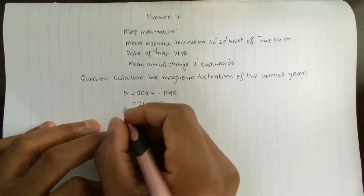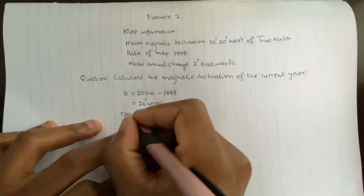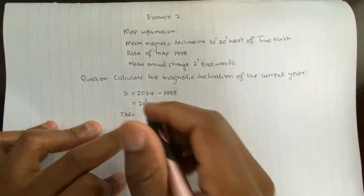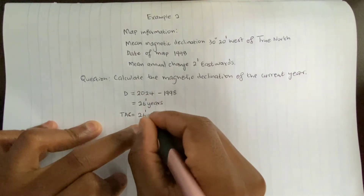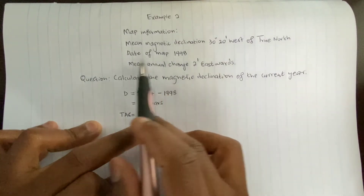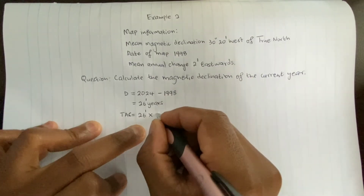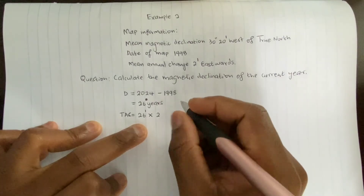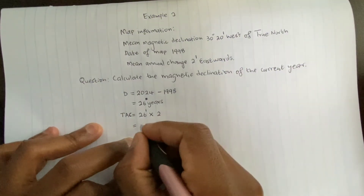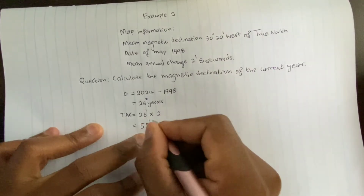The second step is the total annual change, abbreviated TAC. The total annual change equals 26 years times 2 minutes east, which gives us 52 minutes east.